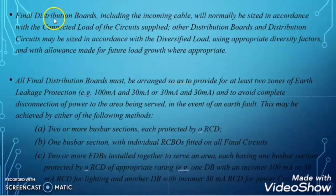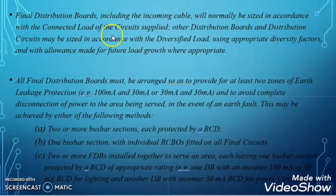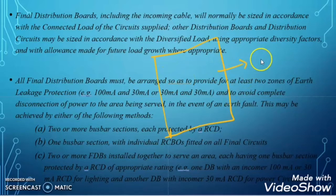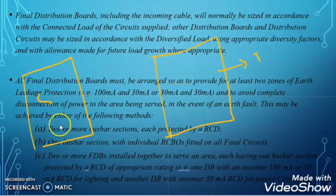The first ADDC clause states: final distribution boards including the incoming cables will normally be sized in accordance with the connected load of the circuit supplied. Other distribution boards and distribution circuits may be sized in accordance with the diversified load using an approximate diversity factor, with allowance made for future load growth where appropriate. In short, the FDB is designed based on the total connected load, while the SMDB and MDB are designed based on the diversified load.